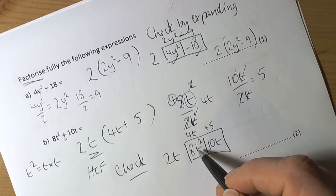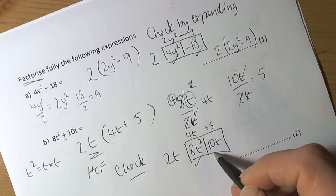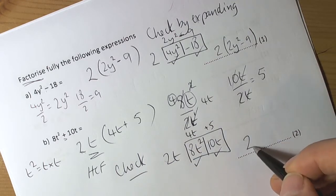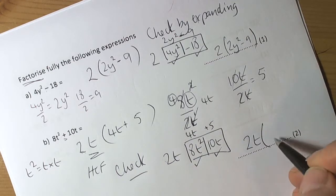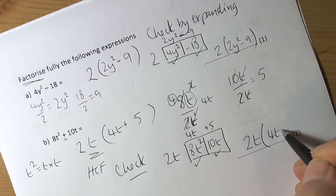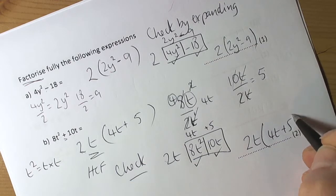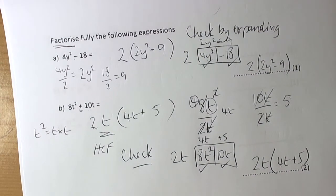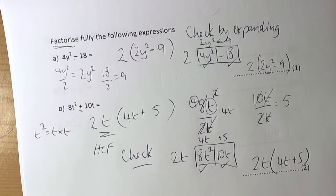So we get 8t² + 10t, which confirms the answer is 2t(4t + 5). That's a quick summary of how we factorize these expressions into single brackets.